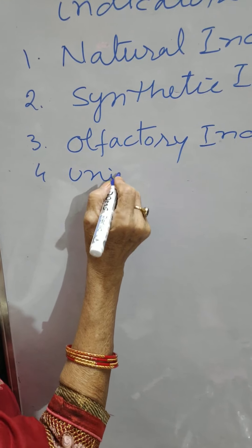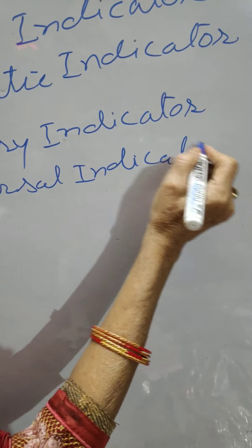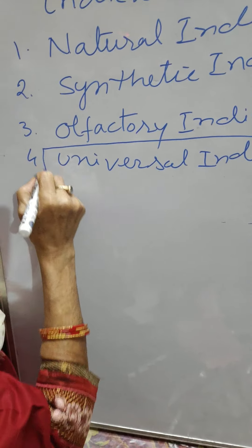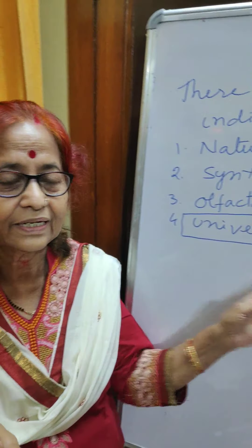The 4th is the universal indicator, and this is the most important indicator. Universal indicator is the mixture of different numbers of indicators. It shows different colors at different concentrations of acid or base. If the acid is strong it shows one color, if weak another, if the base is strong or weak, different colors. With the help of color, we can identify whether the solution is strong acid, weak acid, strong base, or weak base.